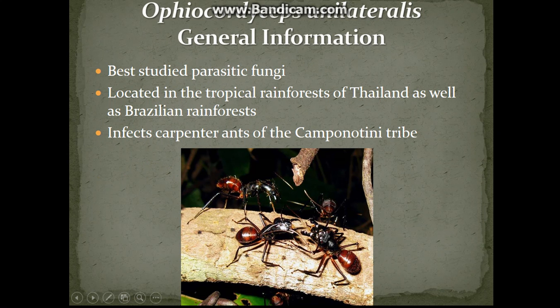Ophiocordyceps unilateralis is actually the most studied parasitic fungi of all the species. These fungi have a relatively small distribution and are located in the tropical rainforests of Thailand as well as a few Brazilian rainforests. Specifically, this fungus infects carpenter ants of the Camponotini tribe and is so potent that it will potentially wipe out entire colonies of ants.